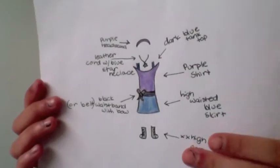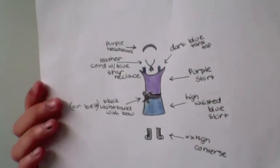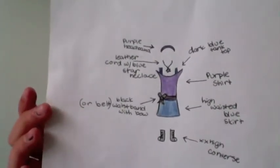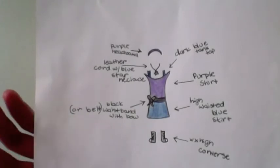The shoes for this outfit are tall converse that go pretty much up to your knee. The skirt is a high-waisted dark blue skirt with a stretchy black waistband and a satin bow at the side.